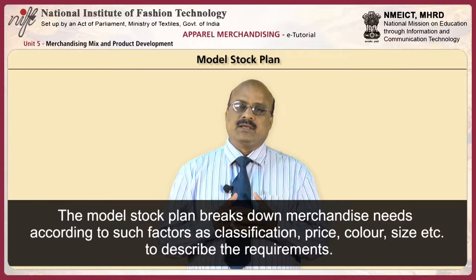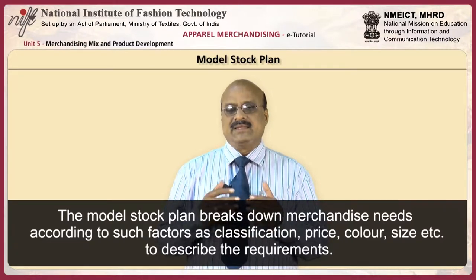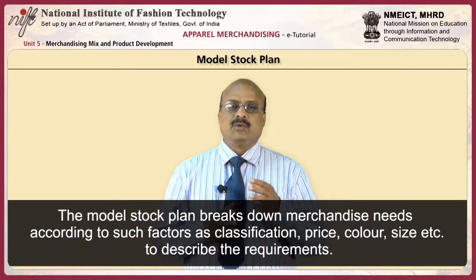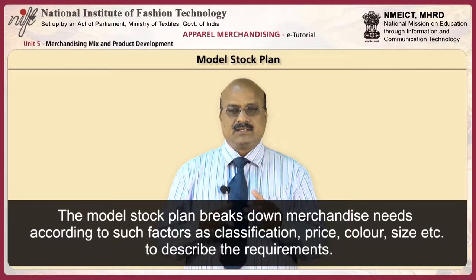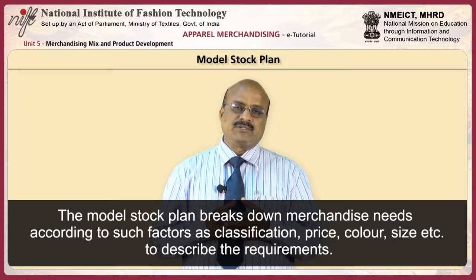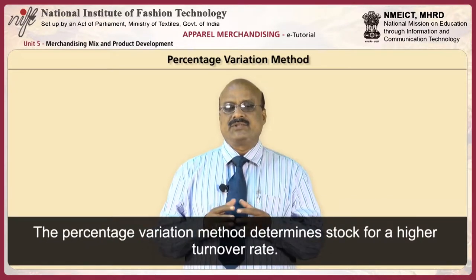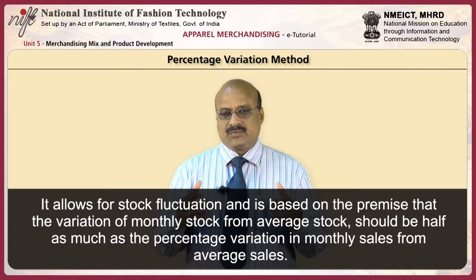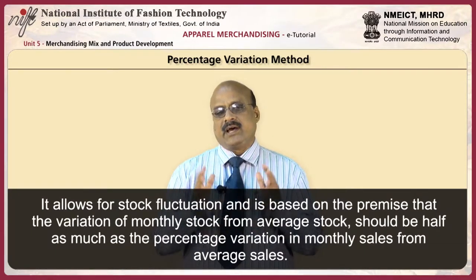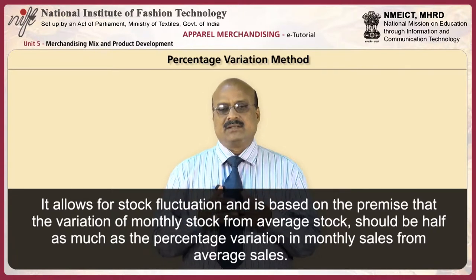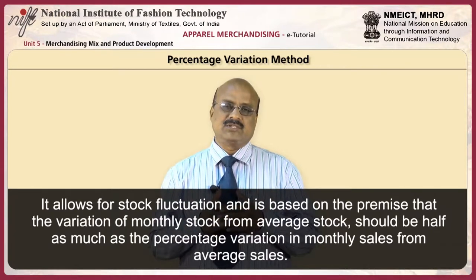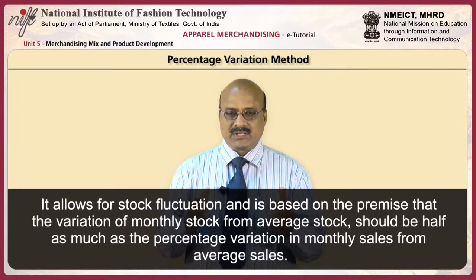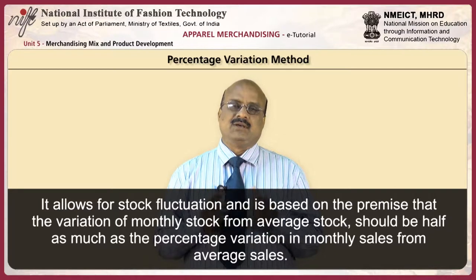The model stock plan breaks down merchandise needs according to factors such as classification, price, color, size, etc., to determine the requirements. The percentage variation method determines stock for a higher turnover rate. It allows for stock fluctuation and is based on the premise that the variation of monthly stock from average stock should be half as much as the percentage variation in monthly sales from average sales.